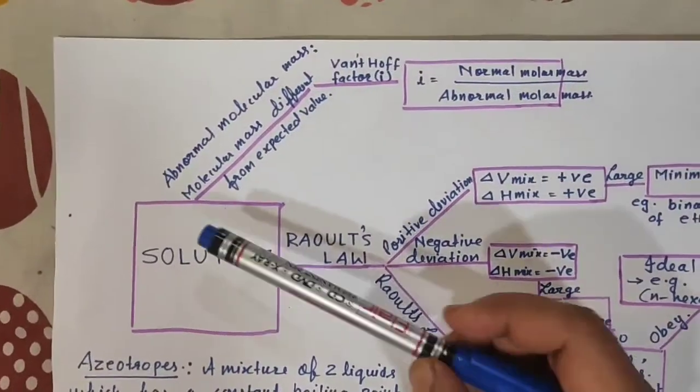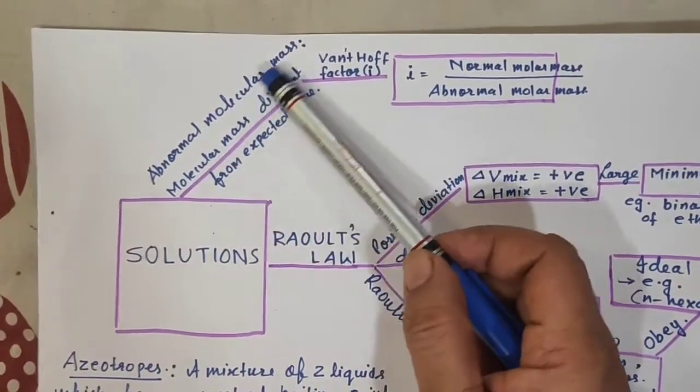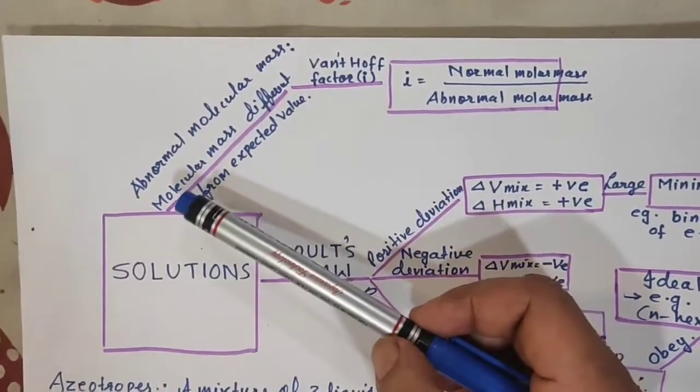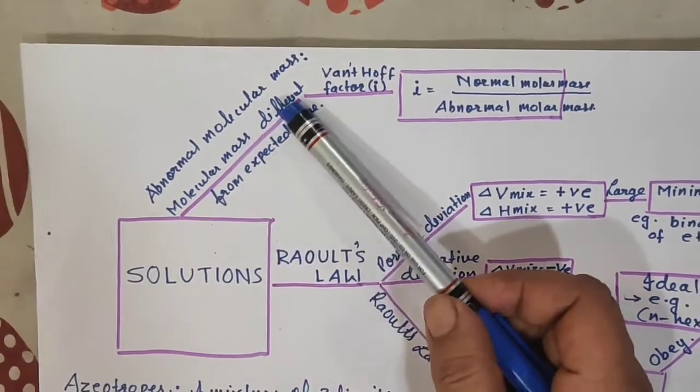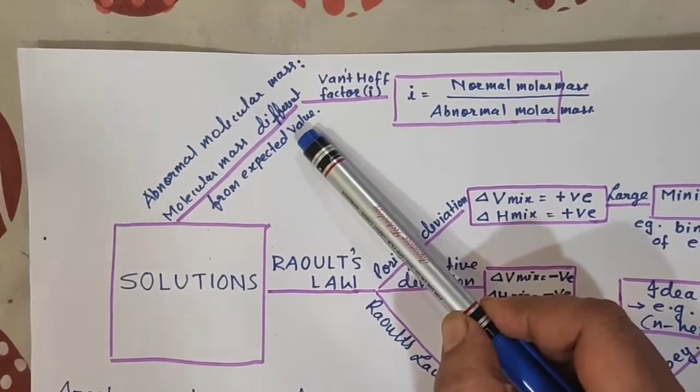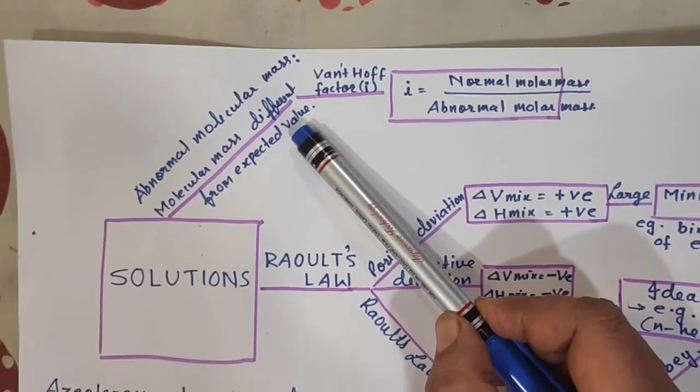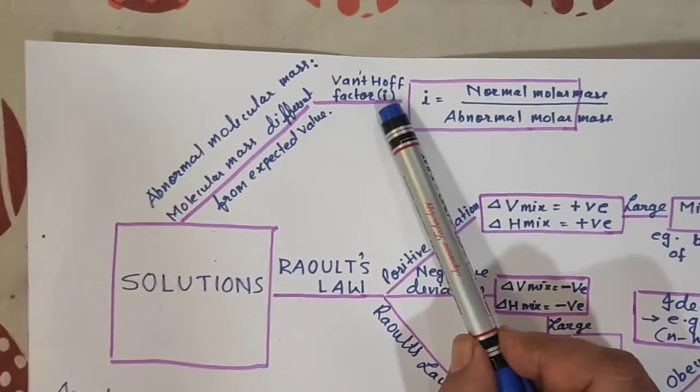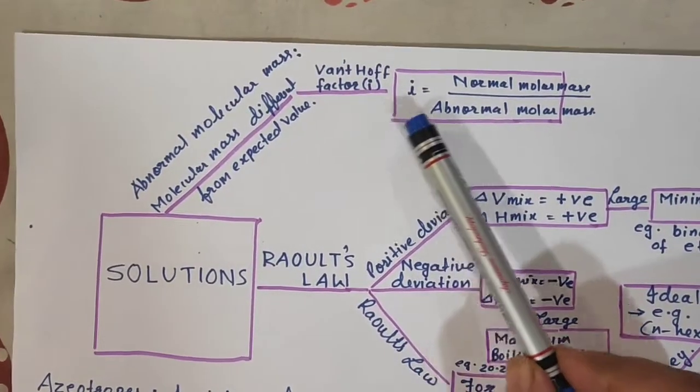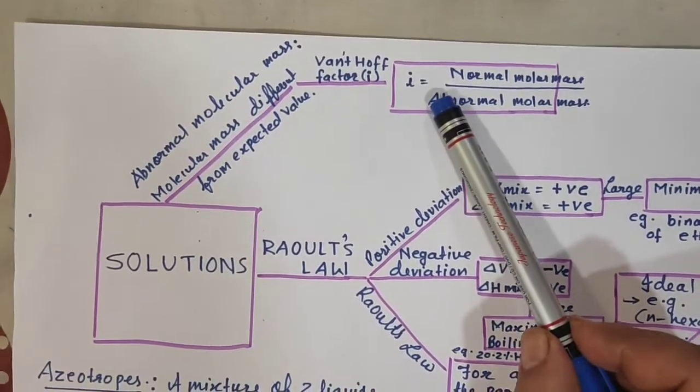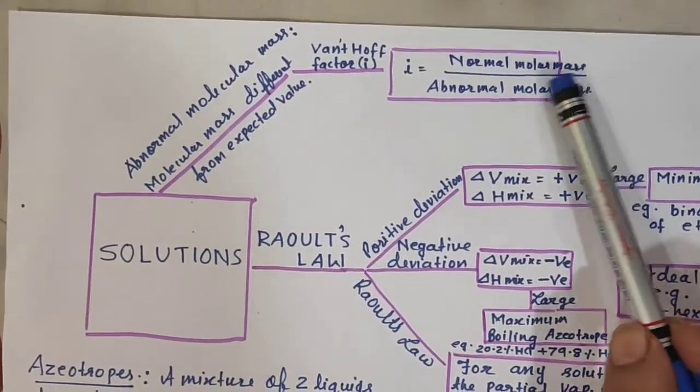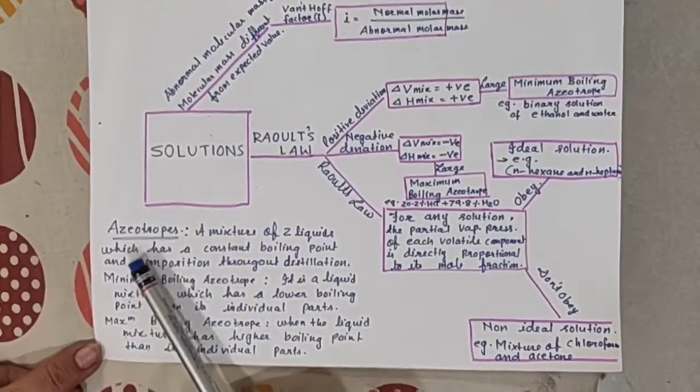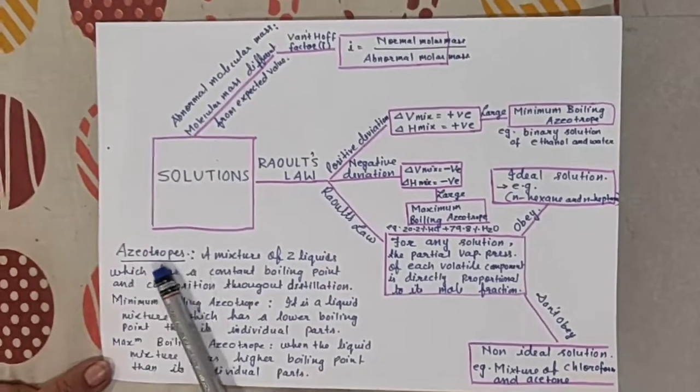In solutions, one more thing we have read. That is abnormal molar mass. Abnormal means when the molecular mass is different from expected value, either more or less. That is abnormal molar mass. And we learned van't Hoff factor. How to find small i? That is van't Hoff factor.